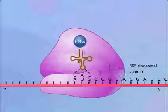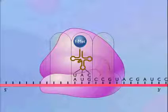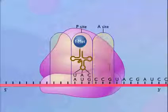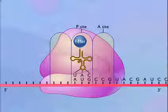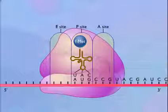Proteins called initiation factors are also involved but are not shown. The 70S ribosome has two sites to which transfer RNA-carrying amino acids can bind. One is called the peptidyl, or P-site, and the other is called the acceptor, or A-site. There is also a third site called the exit, or E-site, where transfer RNAs are released.